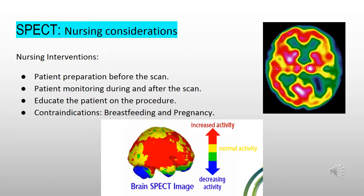Nursing interventions for the SPECT scan include preparing the patient for the scan before it is performed to increase cooperation and relieve anxiety, patient monitoring during and after the scan to check for allergic reactions to the radiopharmaceutical agent, educating the patient on the procedure and why it is being performed, and being aware that breastfeeding and pregnancy are contraindications of a SPECT scan.